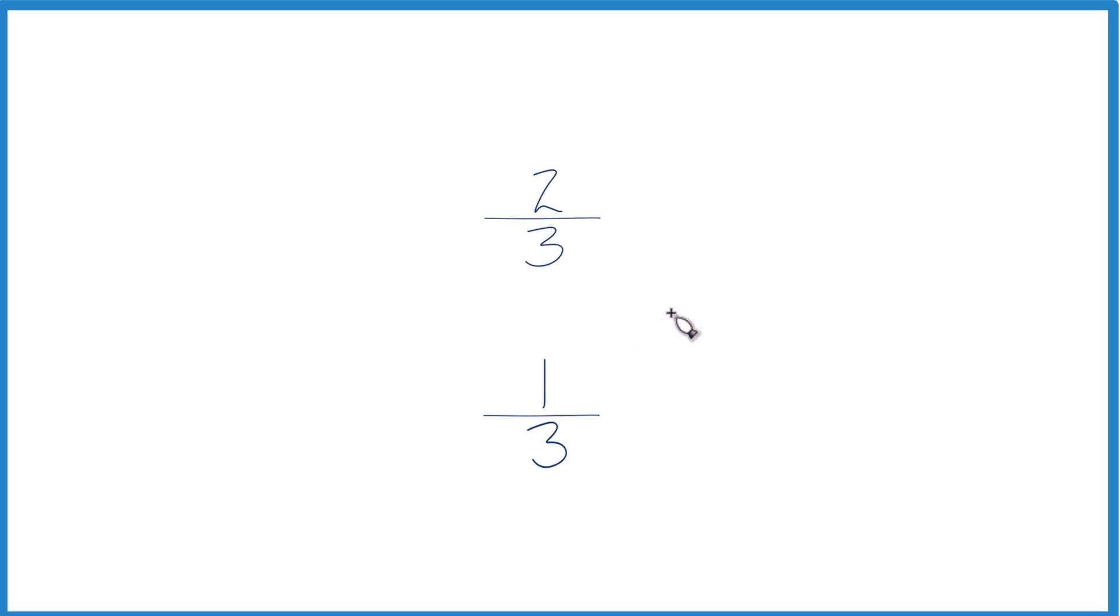We could take a calculator, divide two by three, and then divide one by three, and compare the decimals to figure out which one is bigger, two-thirds or one-third.